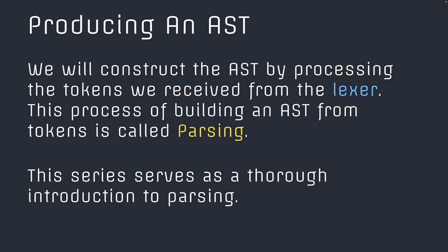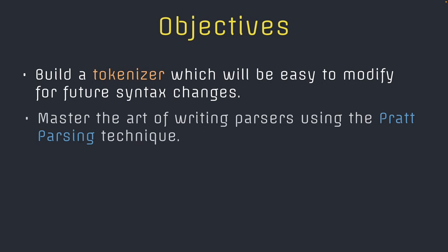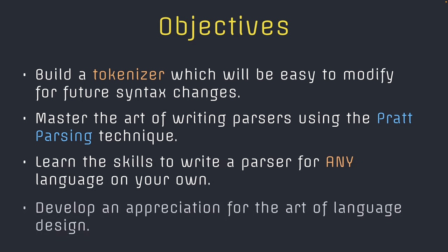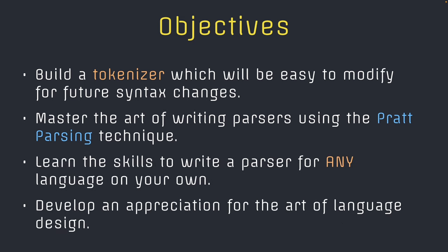So even though we're not going to be building a functional language where you can actually run the code, this will be a building block, because to run any code, you first actually have to build an AST. To build an interpreter, you have to build an AST. To build a compiler, you have to build an AST. So this language series is incredibly important to get into language development. The objectives for the series are building a tokenizer using popular constructs such as regular expressions, building a prep parser using the prep parsing technique, and you'll be able to apply all of these skills to write a parser for any language.